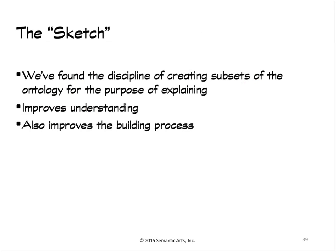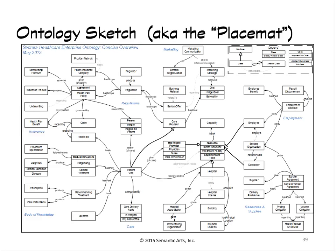Another thing we found quite helpful is what we call the sketch. When you design ontologies, sometimes they do get complex, and we found that just stepping back every once in a while and creating a picture of the ontology that will fit on what we call a placemat — an 11 by 17 piece of paper — improves not only the ability to explain it to somebody else, but also your own understanding and helps the building process. A sketch is not an ontology — it's not formal. It's just boxes and arrows and labels, but it allows you to sit down and have a conversation about what these things mean. There's something like this that holds pretty much every organization together, at least everyone we've seen so far.